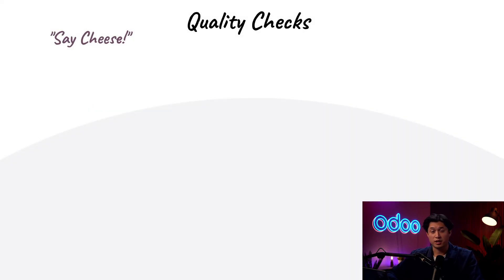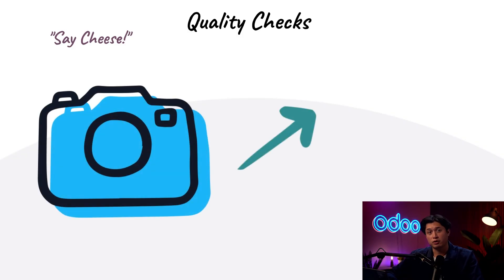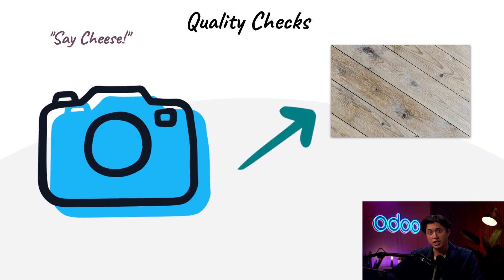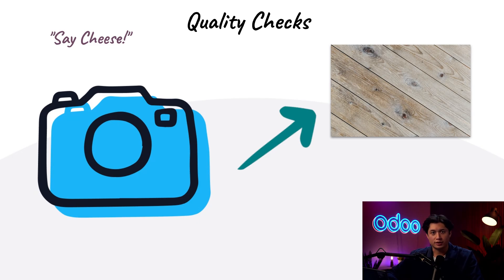Next is the take-a-picture type. This check is also pretty straightforward. Employees simply need to take and upload a photo of the product in its current state. The check can then be used to prove the product's condition upon arrival or to confirm that a specific manufacturing step was completed. This check requires an image upload, making it excellent for capturing visual evidence.